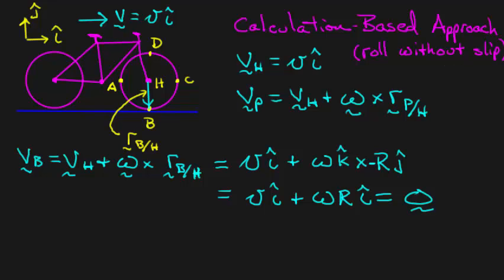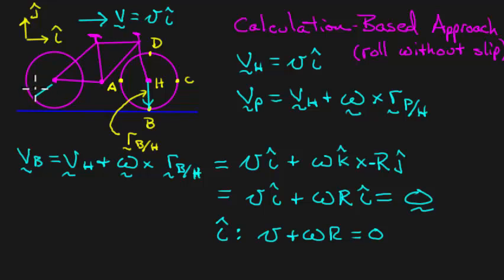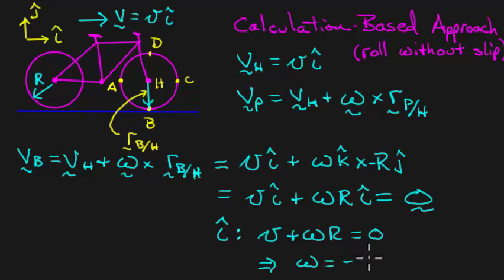Looking at the i-hat direction, V plus omega times R equals zero. V is given, R is given as the radius of the wheel, so this tells us the angular velocity of the wheel: omega equals negative V divided by R.